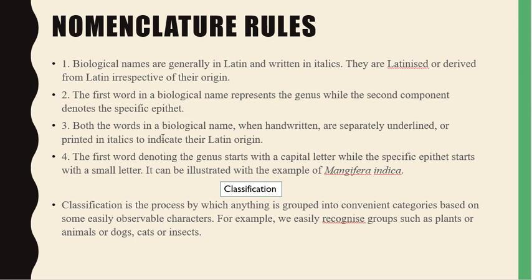Both words in a biological name, when handwritten, are separately underlined, or when printed are in italics, to indicate their Latin origin. The first word denoting the genus starts with a capital letter, while the second epithet starts with a small letter. This can be illustrated with the example of Mangifera indica, which is the mango. Now, what is classification? Classification is the process by which anything is grouped into convenient categories based on some easily observable characters.